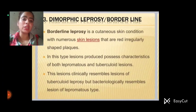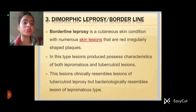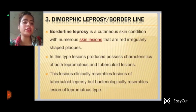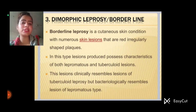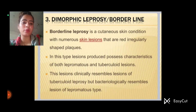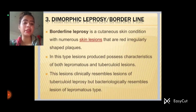Then, dimorphic leprosy and borderline leprosy. Borderline leprosy is a cutaneous skin condition with numerous skin lesions that are red, irregularly shaped plaques. In borderline leprosy, the skin is affected with red color, irregularly shaped plaques formation. In this type, lesions possess characteristics of both lepromatous and tuberculoid lesions.